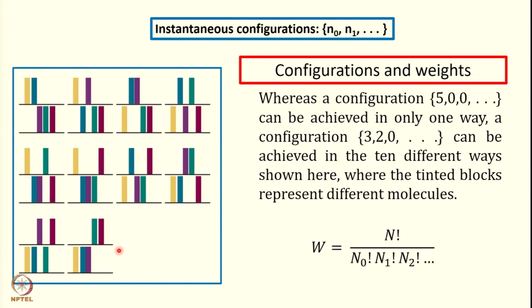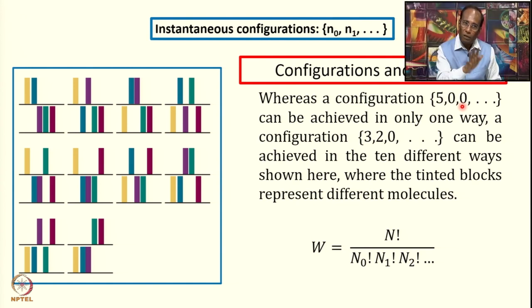Let us consider an instantaneous configuration corresponding to (5, 0, 0). The way we read this is that there are 5 particles in the ground state with energy E0, and no molecules in any excited state. This configuration (5, 0, 0) can be achieved in only one way — all 5 molecules are in the ground state.